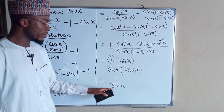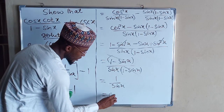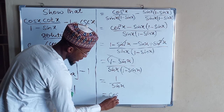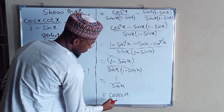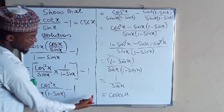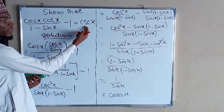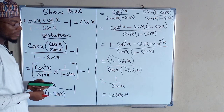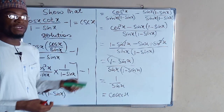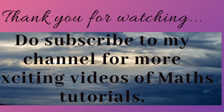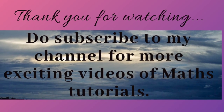From our trigonometric identities, one divided by sin(x) equals cosec(x). So on the left-hand side we have cosec(x), and on the right-hand side we have cosec(x). Hence the left-hand side is equal to the right-hand side, and the identity is proven.